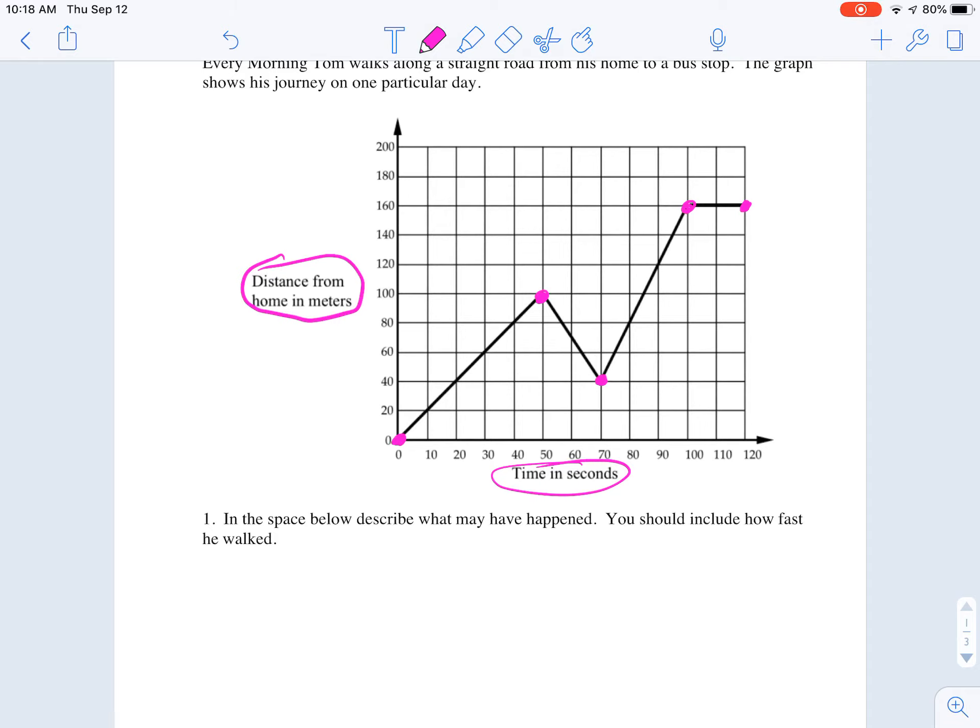The how fast question, that's a little bit new for us. But what I'm seeing on this graph is that from 0 to 50 seconds, he seems to be increasing his distance from home. So from 0 to 50, Tom is walking away from home, which you would imagine is to the bus stop.